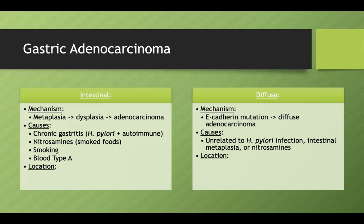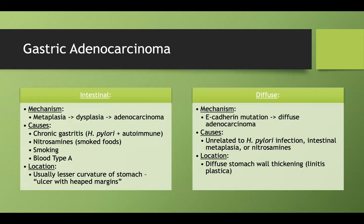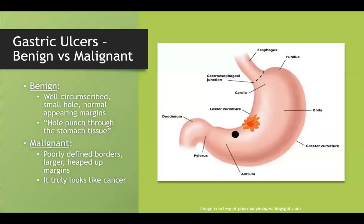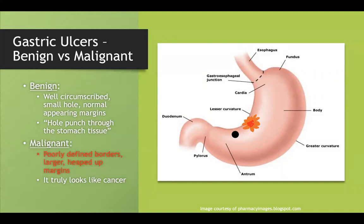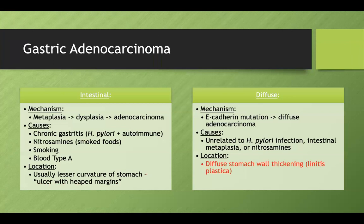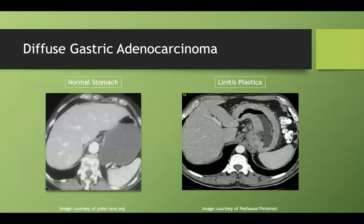In terms of location, intestinal gastric adenocarcinoma is usually on the lesser curvature of the stomach as an ulcer with heaped margins — we've already seen those gastric ulcers. Diffuse gastric adenocarcinoma, as the name implies, presents with diffuse stomach wall thickening. That gastric ulcer that looks malignant is the intestinal type, described with poorly defined borders and heaped up margins.